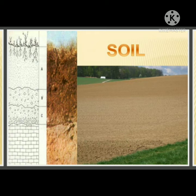Soil is a layer of unconsolidated material at the earth's surface. It is formed by the breaking down of rock particles due to weathering and erosion. It contains humus — that is, decayed plants and animal remnants — as well as living organisms, water, and air.